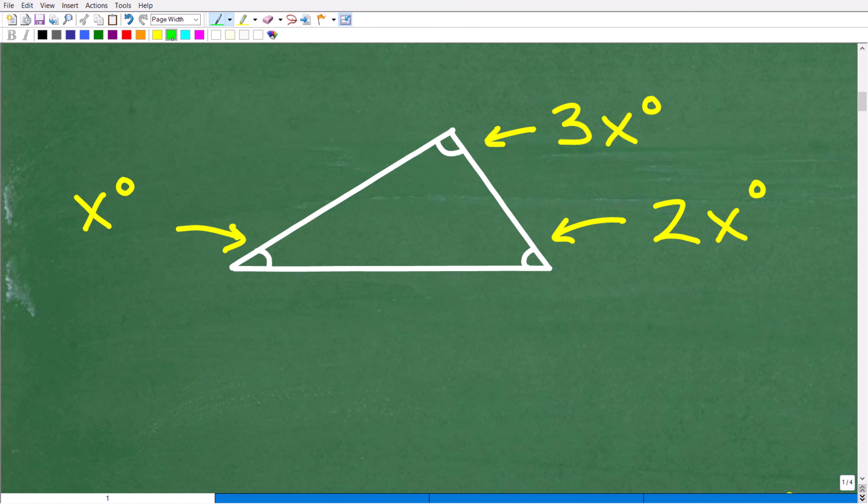And here, we have no information other than this is a triangle, and of course these degrees have these relationships. So this one here is the smallest angle, it's x degrees. This one is twice the smallest, so this is 2x degrees. And then this angle here is 3 times the smallest, or 3x degrees.